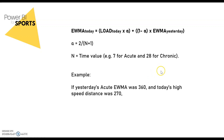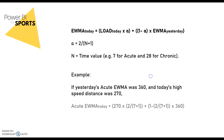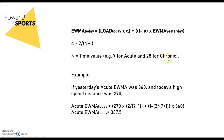To give a practical example: imagine yesterday's acute exponentially weighted moving average was 360 and today's high speed distance was 270. After replacing all values in the formula, that will ultimately give you your result for the moving average of today.